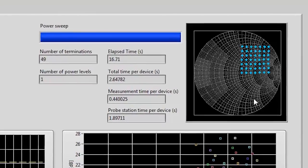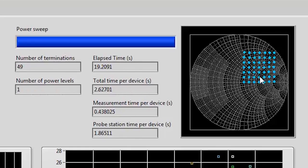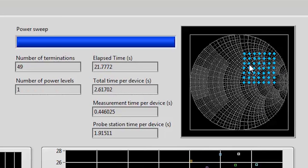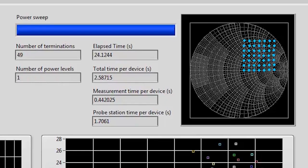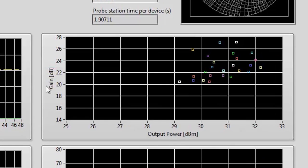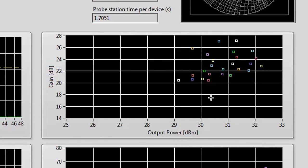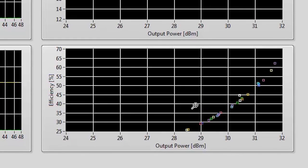So in the top right corner of my GUI you can see the actual provided and measured load impedances for a total of 49. And in the two lower plots you can see the measured gain versus output power and the measured efficiency versus output power for all the different load impedances.